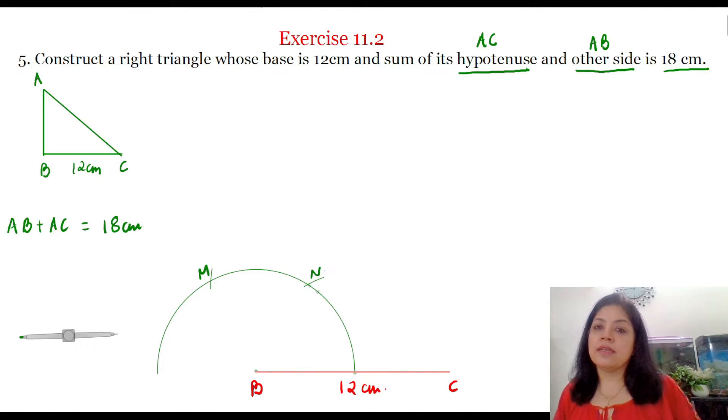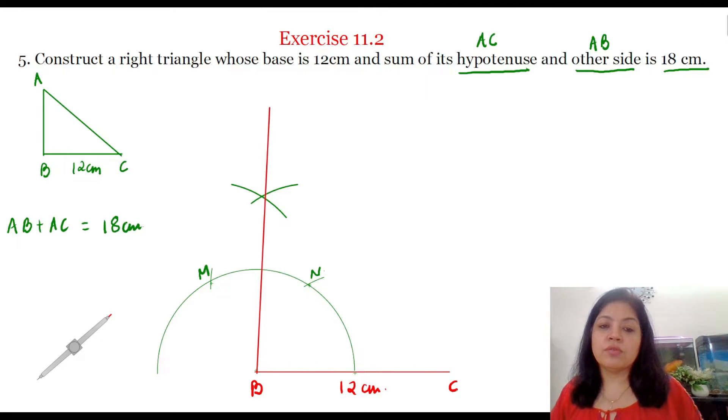Now to get 90 degree angle, we will bisect this arc MN. With N as center, draw an arc. Now with the same radius, place your compass at M and with M as center, draw another arc cutting this arc. Now from B, we will draw a ray which passes through this point of intersection of the two arcs. So this ray is ray BX.